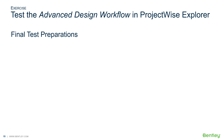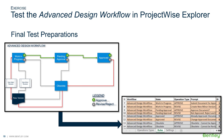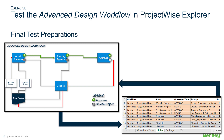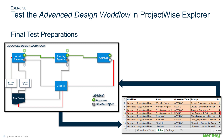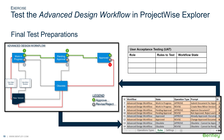Before we begin UAT, let's review the components of the system, including the conceptual workflow process diagram and the rules worksheet. To test the workflow, we need to verify five rules, including number 1, number 2, number 3, number 4, and number 6. We will conduct user acceptance testing to verify these rules.